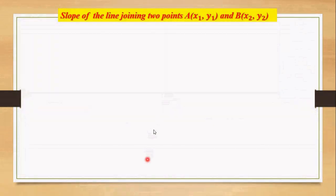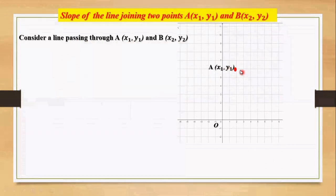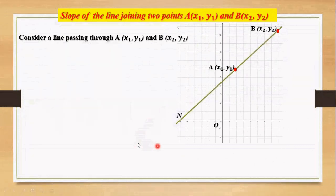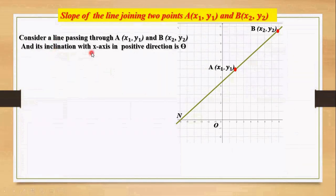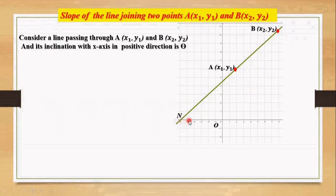Now we are going to find the slope of a line when two points are given. Consider two points A(x1, y1) and B(x2, y2). The line passes through these two points and makes inclination theta with the x-axis in the positive direction. From A, draw AP perpendicular to x-axis, and from B draw BR perpendicular to x-axis.